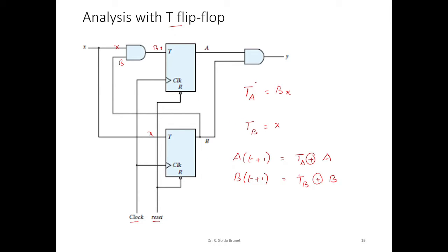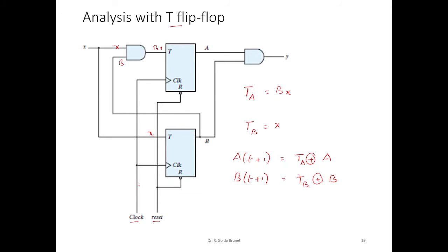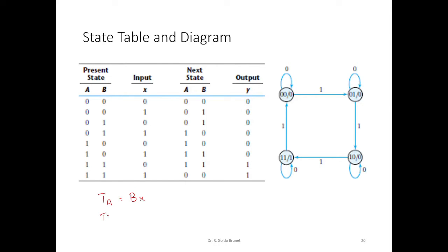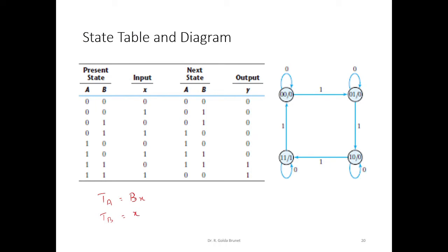And now, using these input equations, we can construct the transition table. So we have the present state AB and input X, we have to compute the next state. And this next state, we cannot directly compute it. We have to use the flip-flop input equations to get the output of this one. So TA is BX and TB is X, right, simply X.